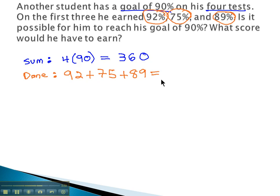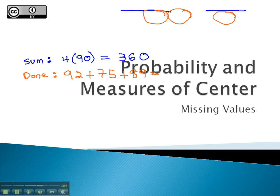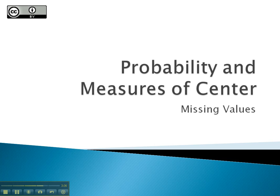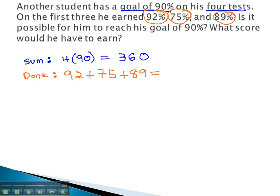Adding up 92 plus 75 plus 89 tells us that he has earned 256 points.